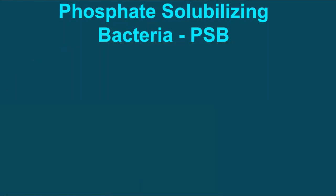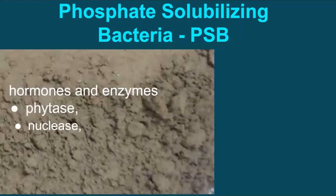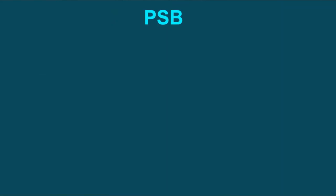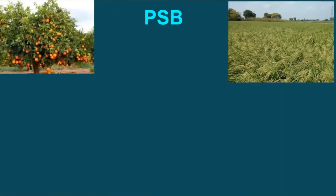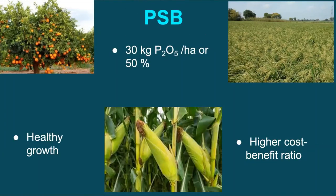PSB also secretes certain hormones and enzymes like phytase, nuclease, lecithinase, that promotes plant growth and yield. Therefore, application of PSB with phosphatic fertilizer help to supplement nearly 30 kg phosphate per hectare or equivalent and could save up to 50% of chemical fertilizers.